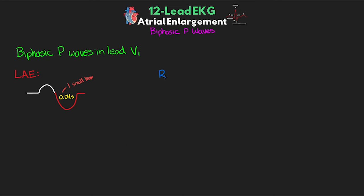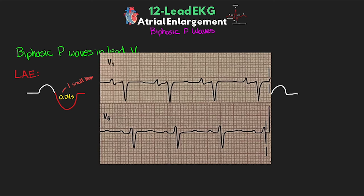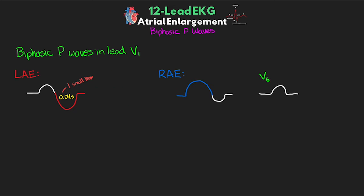With right atrial enlargement, the first part of the P-wave in V1 is the largest part, and this P-wave must also be taller than the P-wave seen in V6. In this example, we have a biphasic P-wave in V1 where the first part is the largest, and comparing it to V6, the first part of V1 is clearly larger — confirming right atrial enlargement. A helpful memory tip: depolarization begins in the right atrium at the SA node, so if the first part of the biphasic wave is the largest, it came from the right atrium first — right atrial enlargement. If the second part is largest, that's the left atrium depolarizing — left atrial enlargement.